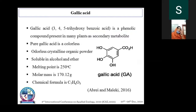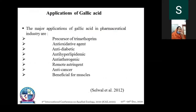Starting with the introduction: Gallic acid is basically a phenolic compound present in many plants as a secondary metabolite. The pure gallic acid is colorless, odorless, crystalline organic powder that is soluble in alcohol and ether. Its melting point is 250°C, molecular mass is 170 grams, and chemical formula is C7H6O5.